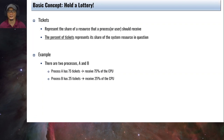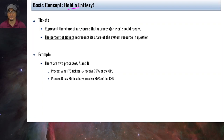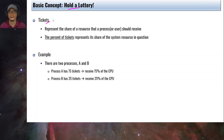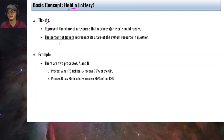How do we implement this fair share scheduling? The idea is to hold what we call a lottery. In a lottery we have tickets, and the tickets represent the share of a resource that a process should receive. The more tickets you have, the more chances of winning.